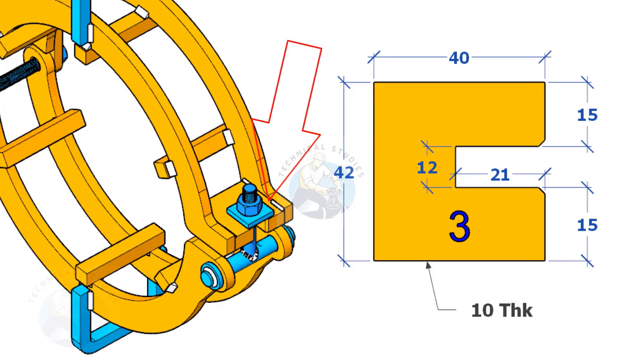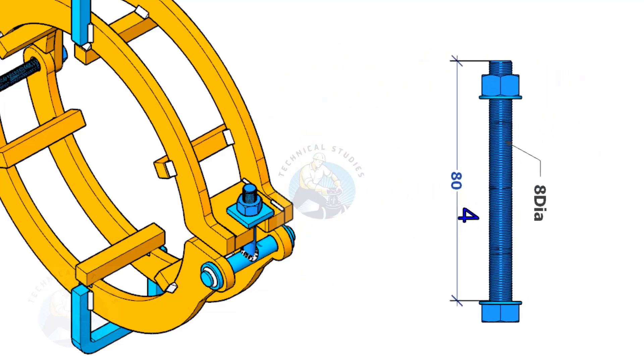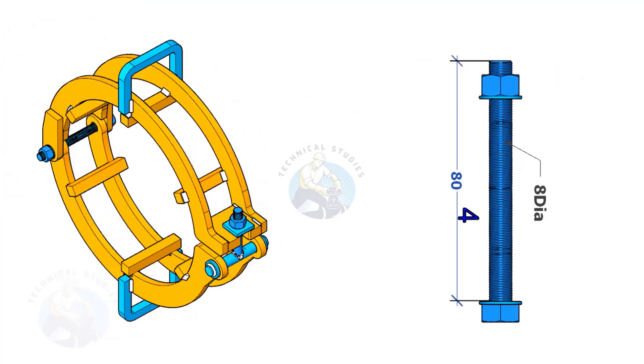Item number three sits here. Item number four is a bolt. You can use a stud bolt, or a round bar of the same size, with stoppers tack welded on both ends of the rod after full assembly.